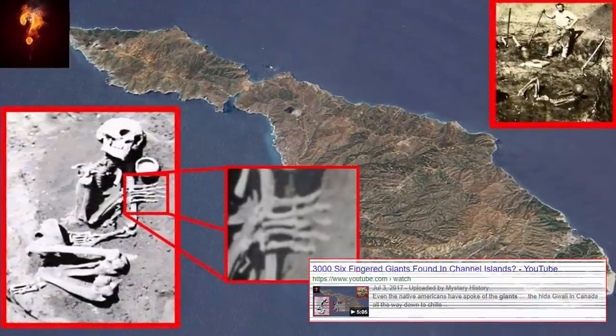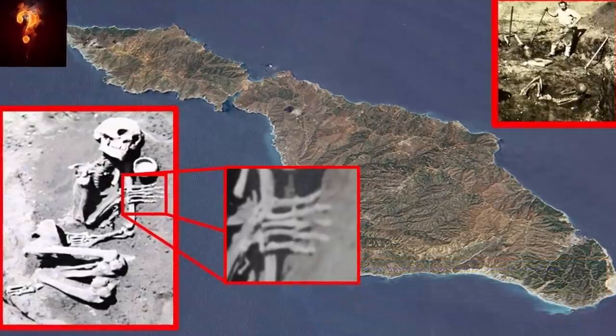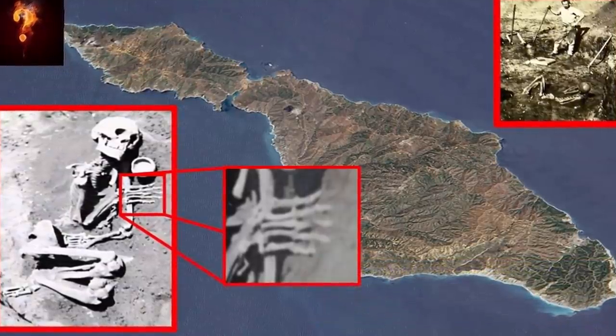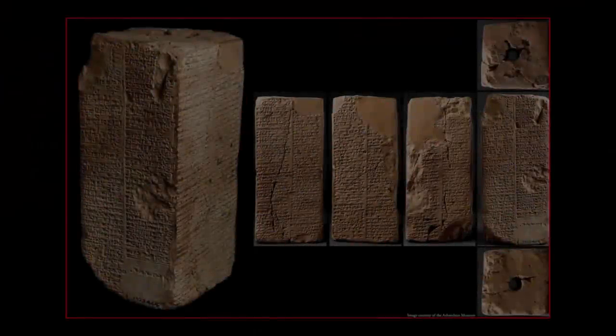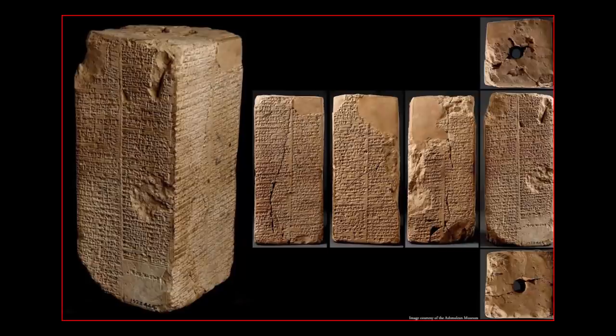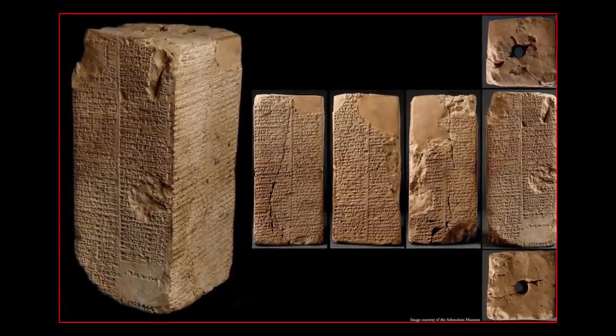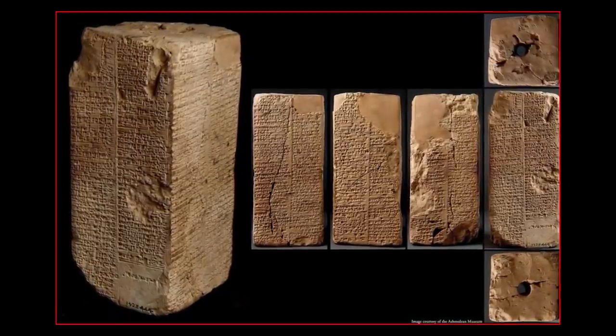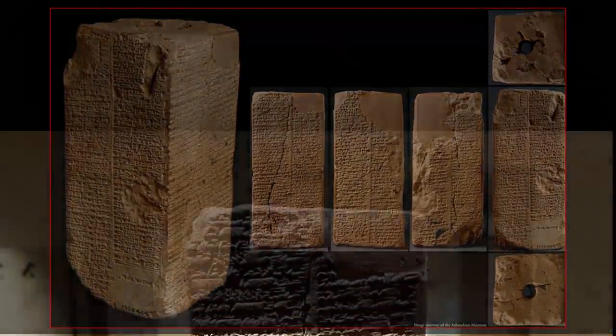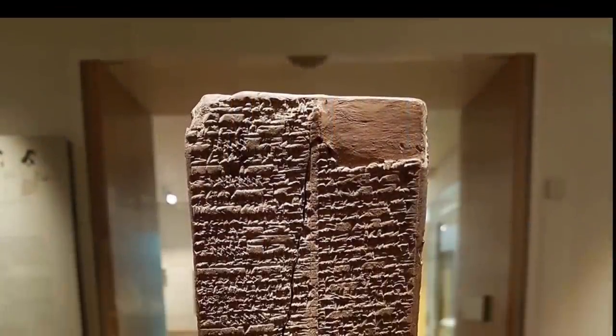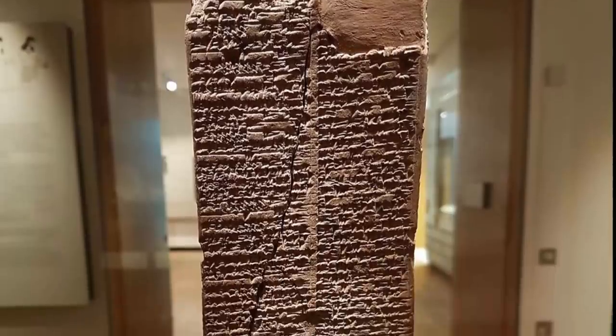For as the list states, and I quote: After the kingship descended from heaven, they were situated within Eredung in Alulim. It is named after Eredung, who became king. He ruled for 28,800 years, with Alijar subsequently ruling for 36,000 years after him. Two kings who ruled for 64,800 years, end quote.